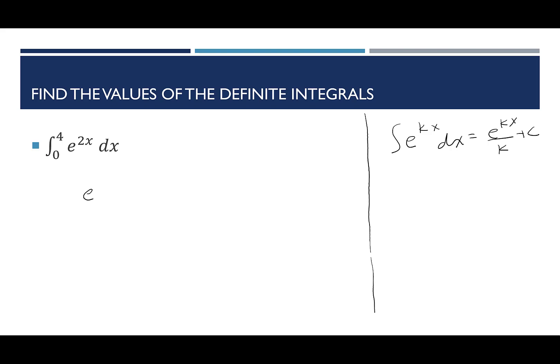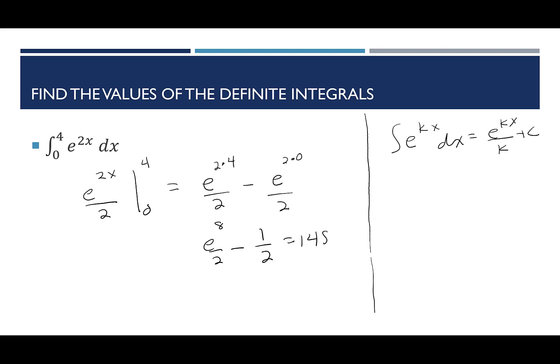Using that shortcut for the integral from 0 to 4 of e^(2x) dx: e^(2x) divided by 2, evaluated from 0 to 4. Plugging in 4: e^(2·4)/2, minus e^(2·0)/2. So e⁸/2 minus e⁰/2, which is e⁸/2 minus 1/2. Putting that in the calculator: e⁸/2 minus 1/2 is approximately 1,489.98.